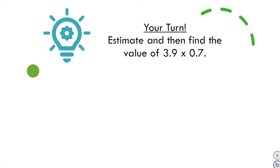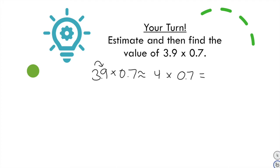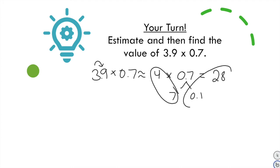For this problem, estimate and then find the value of 3 and 9 tenths times 7 tenths. To estimate: 7 tenths stays the same — one non-zero digit. Multiplying 3.9 times 7 is not a mental math problem, so I round to the greatest place value, giving 4. I split 7 tenths into 7 and 1 tenth. 4 times 7 is 28. Then 28 times 1 tenth moves the decimal one place left, giving an estimated answer of 2 and 8 tenths.